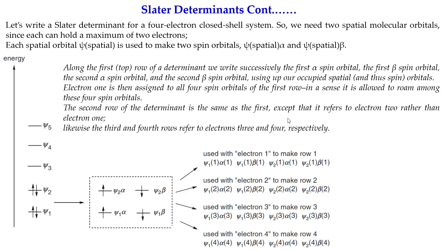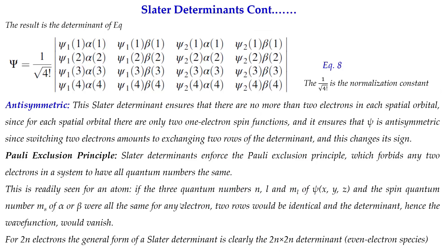Each electron is assigned to all four spin orbitals of its row — in the sense that it is allowed to roam among these four spin orbitals. All electrons have freedom to roam among all spin orbitals. We now have four rows forming a 4×4 determinant. The wavefunction is written as psi equals 1 over root(4!) times this determinant, where 1/sqrt(4!) is the normalization constant. For a general 2n-electron system, the Slater determinant will be a 2n × 2n determinant.